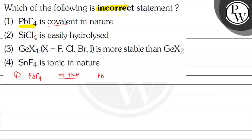Because we know that Pb has large size and F has very small size. According to Fajan's rule, the compound having large size cation and small size anion actually form ionic bond.